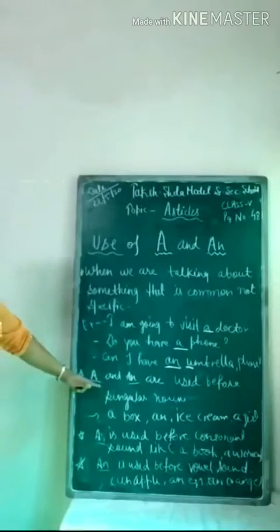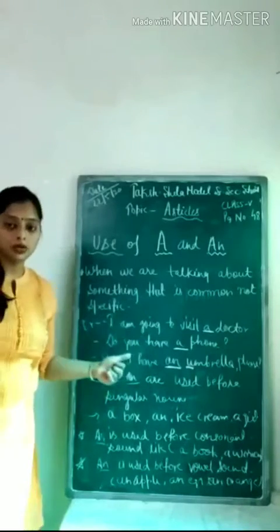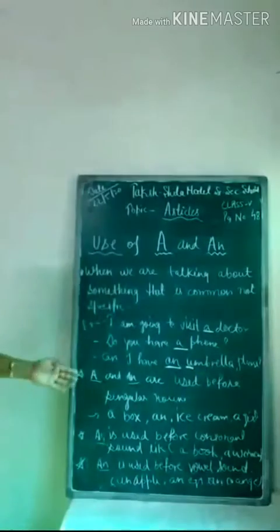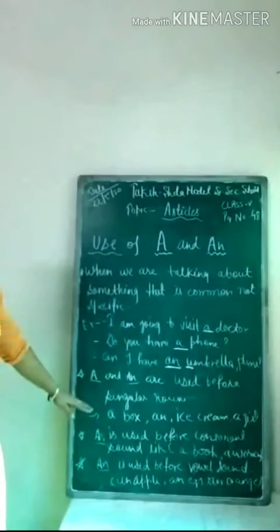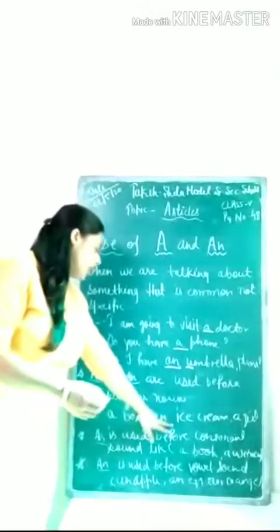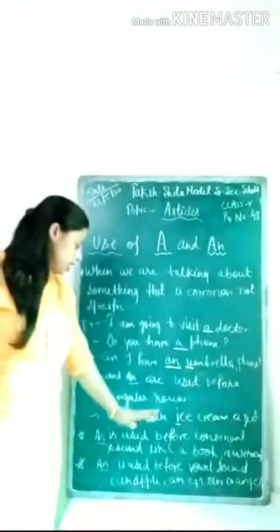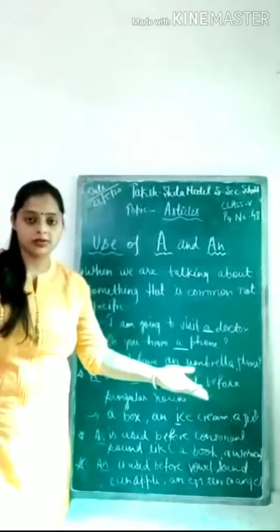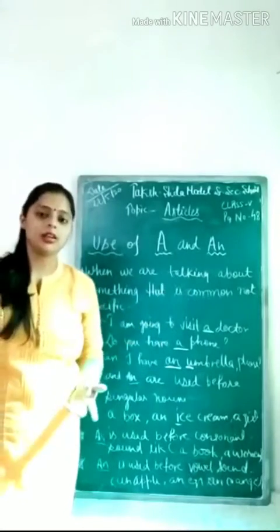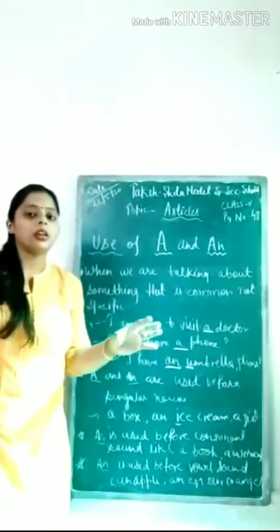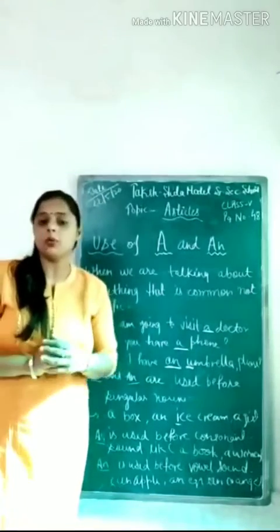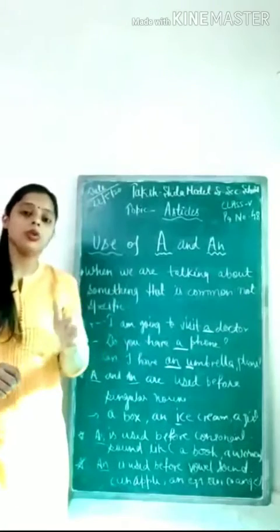Second rule: A and An are used before singular nouns. We never use A or An with a plural noun. For example, 'a box' — we never say 'a boxes.' 'An ice cream' — we never say 'an ice creams.' 'A girl' — if I say 'a girls,' it is incorrect. Both A and An are used with singular nouns only.